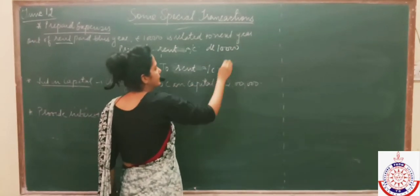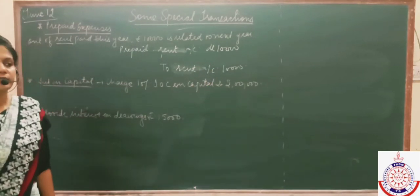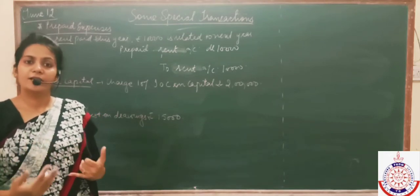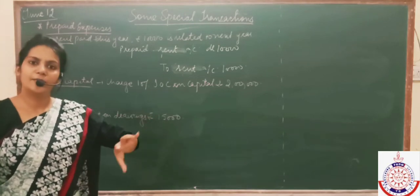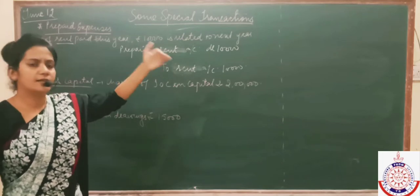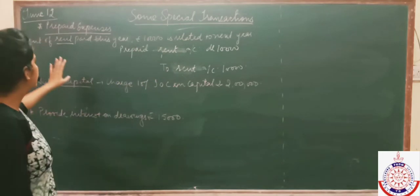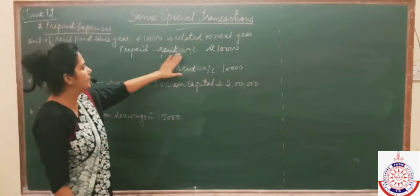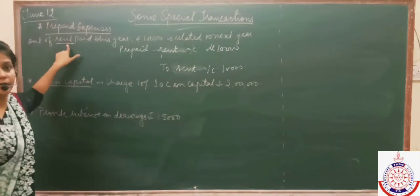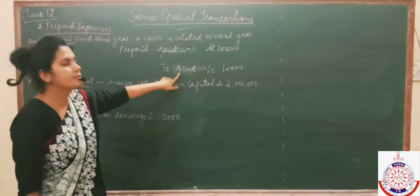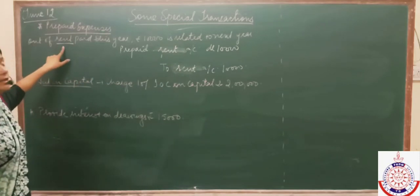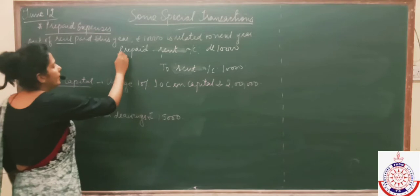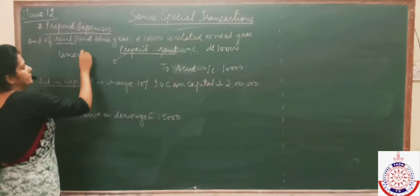The amount is 10,000. Some entries will become clearer with the passage of time as you progress through later chapters. If the expense is insurance, the entry would be prepaid insurance to insurance. If it is interest, the entry would be prepaid interest to interest. Prepaid expenses are also known as unexpired expenses — please make a note of this.